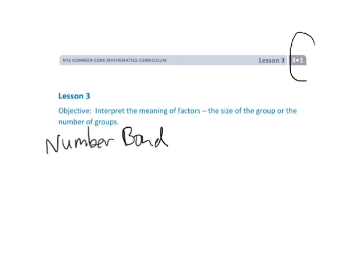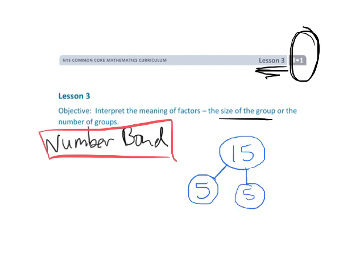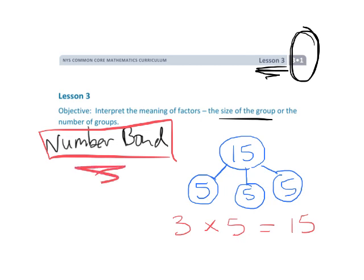This is Grade 3, Module 1, Lesson 3. We're going to continue talking about multiplication, size of the group, and arrays, but we are going to throw in a new concept called number bond. For example, a number bond for 15 might show 5, 5, and 5. This number bond represents the concept of three times five — three groups of five.